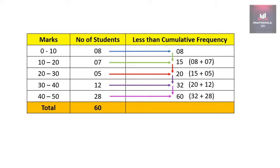Now, how to verify whether the calculation is right or wrong. The total of frequency — that is, the total number of students — is 60, and the last less than cumulative frequency must equal the total of frequency. If they are the same, then our calculation is right.